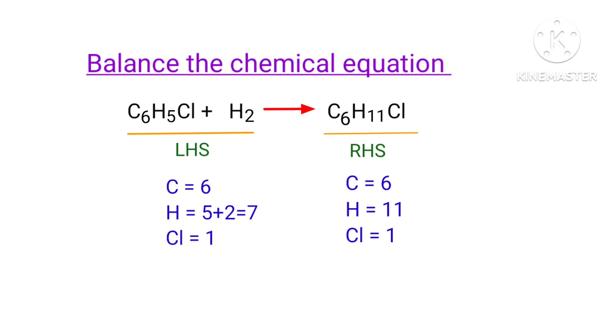The number of atoms are not balanced on both sides. To balance the chemical equation we need to make use of coefficients. A coefficient is the number that we place in front of a chemical formula.